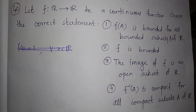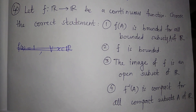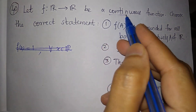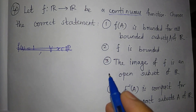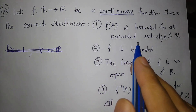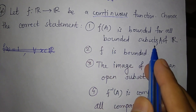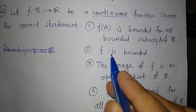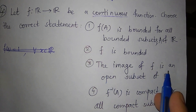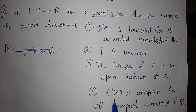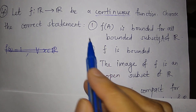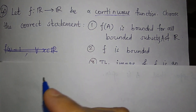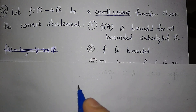Now let us solve this question. We have given a function f from R to R and it is a continuous function. We need to choose the correct statement from four options: first, f(A) is bounded for all bounded subsets A of R; second, f is bounded; third, the image of f is an open subset of R; fourth, f⁻¹(A) is compact for all compact subsets A of R. Clearly the first option is the correct statement.